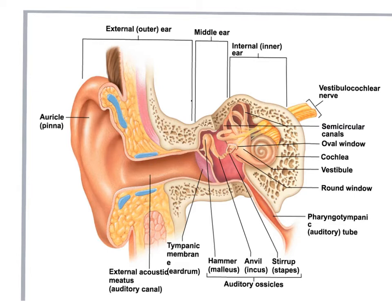Your external ear includes the auricle, and its purpose is only to relay sound into the tube — the external acoustic meatus, or the auditory canal. We have this auditory canal which ends at the tympanic membrane, or the eardrum, which you can see right here.